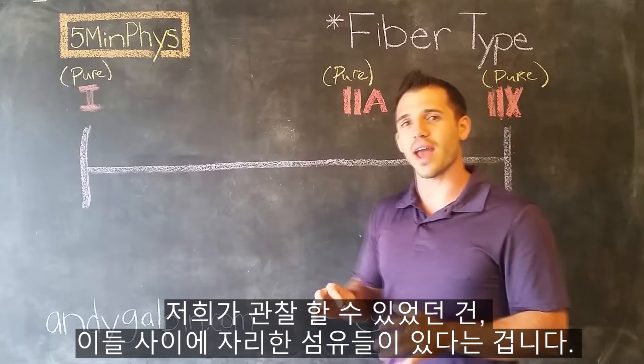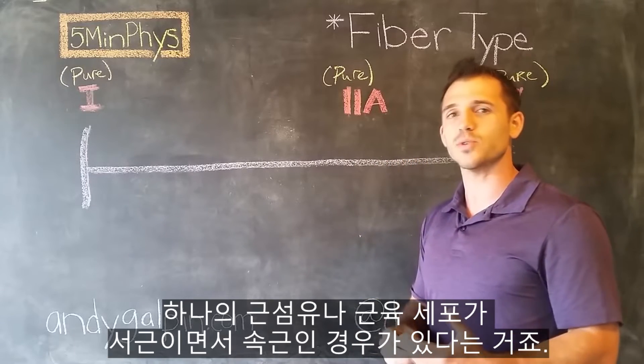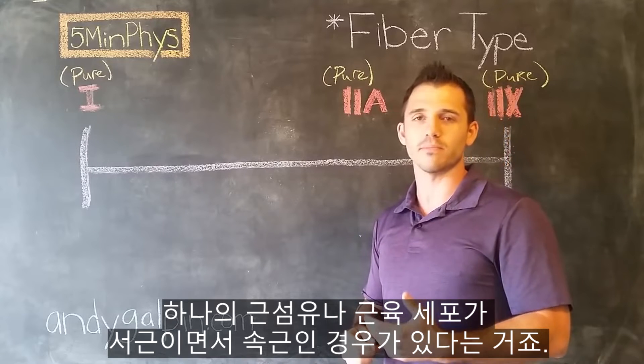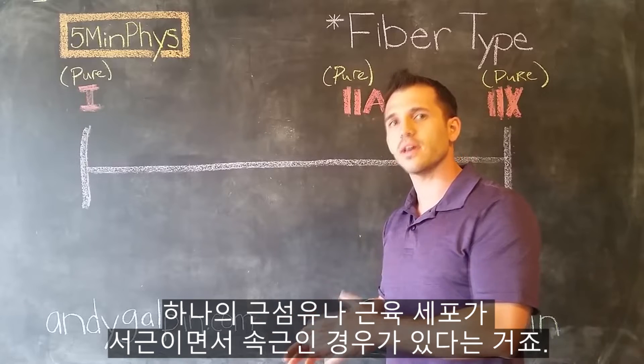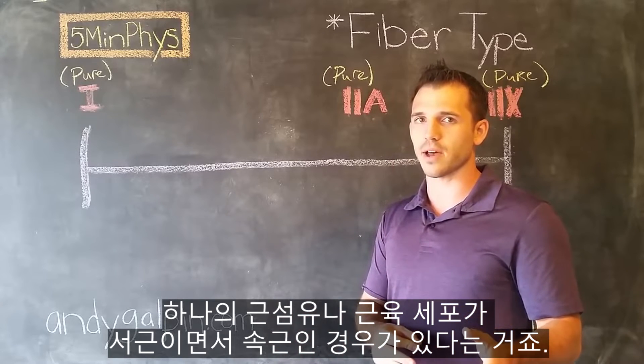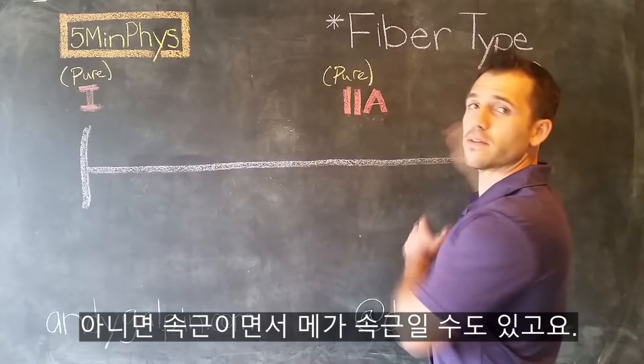What we tend to see actually happen is there are some fibers that are in between these two. So this would be an individual muscle fiber, or myofiber, muscle cell, that is both fast twitch and slow twitch at the same time.